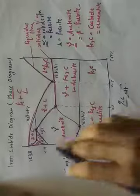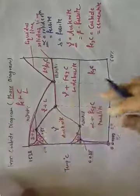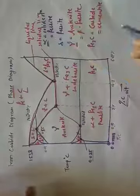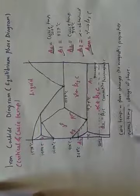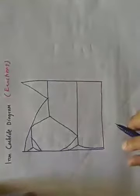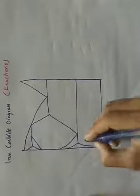Welcome friends. In this session on the iron-carbon diagram, in the last few sessions we discussed the different phases — alpha, gamma, delta, and Fe3C. In the next session we discussed the different critical temperatures and Curie temperatures. Now in today's session we will discuss the reactions: what are the different reactions and different points in the iron-carbon diagram.